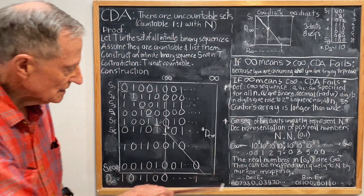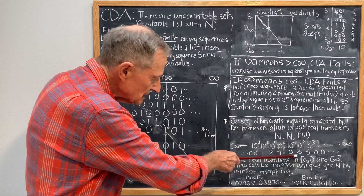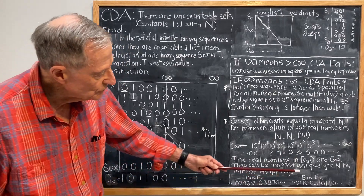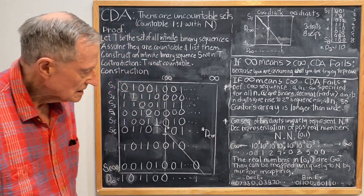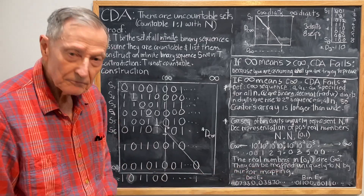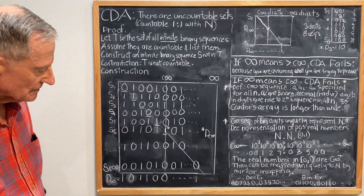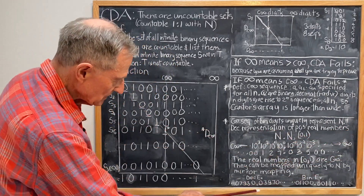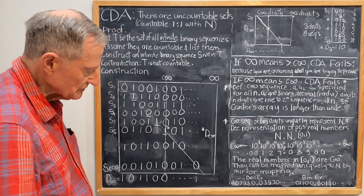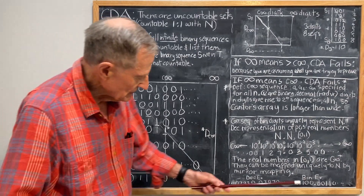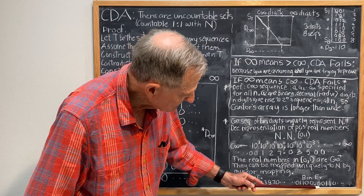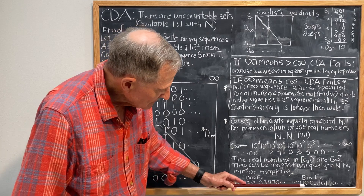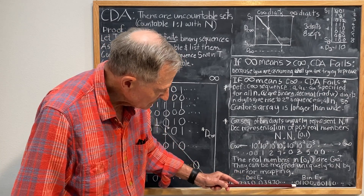Each decimal fraction in [0,1] can be mapped uniquely to the natural numbers by a mirror mapping. For example, 0.03970 followed by infinite zeros maps to the natural number 07930 (infinite zeros), and a binary example: 0.00110 followed by infinite zeros maps to the natural number 01100 followed by infinite zeros.